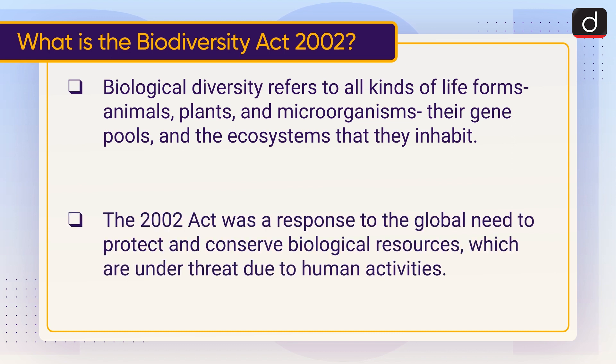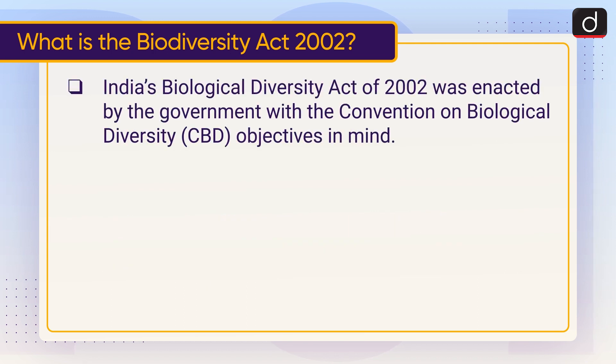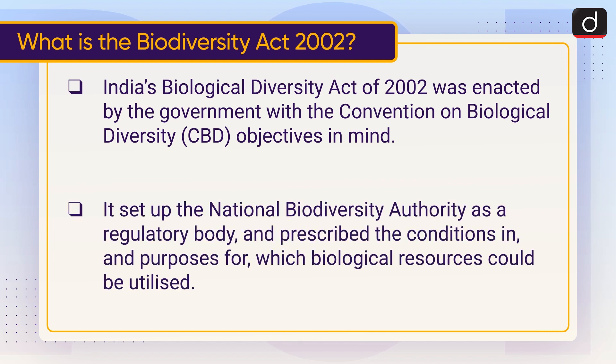The 2002 Act was a response to the global need to protect and conserve biological resources which are under threat due to human activities. India's Biological Diversity Act 2002 was enacted by the government with the Convention on Biological Diversity objectives in mind. It set up the National Biodiversity Authority as a regulatory body and prescribed the conditions and purposes for which biological resources could be utilized.